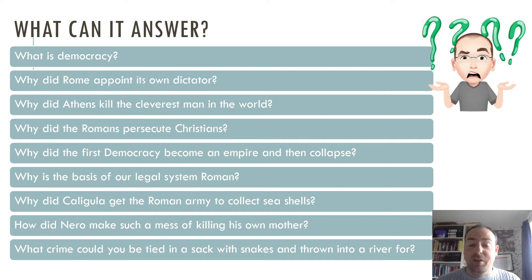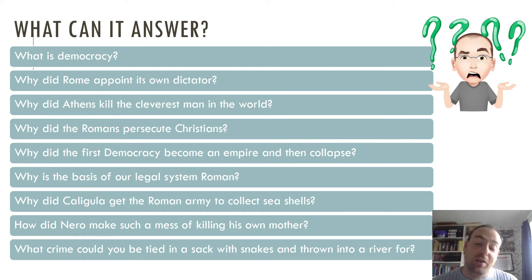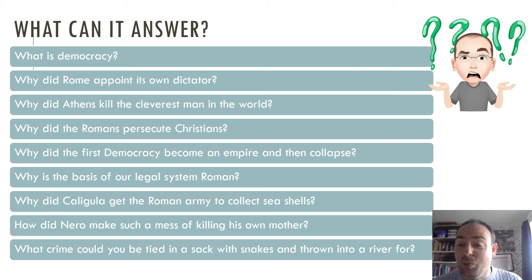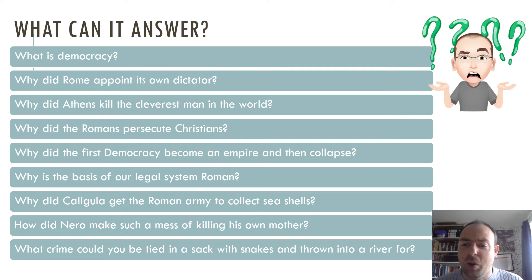We're going to look at Nero and how he made an incredible mess of killing his own mother, and obviously other interesting questions like why he wanted to kill his own mother. Nero — possibly the most infamous of the Julio-Claudians — and the story of how he played the fiddle whilst Rome burned and how much truth there is in that. You'll also find out what crime you could be tied in a sack with snakes — and thrown into the river for, and it might not just be snakes, it could be a dog and all kinds of different animals. So there is lots of really interesting stuff and it's incredibly varied — a diverse world, and how it develops and changes over large periods of time gives you a real insight into this ancient world.